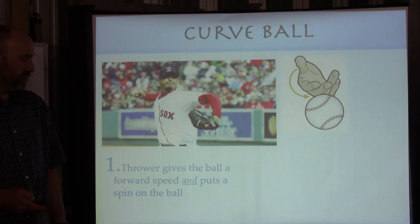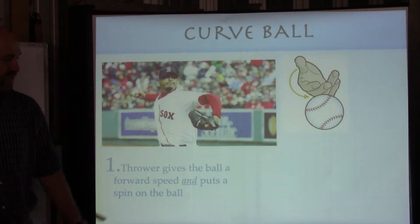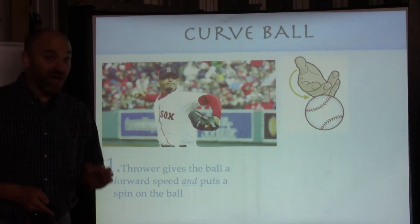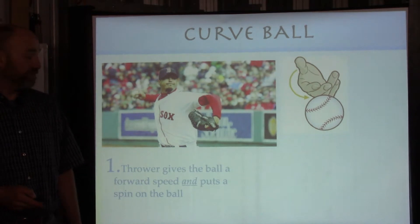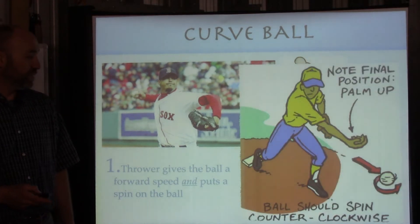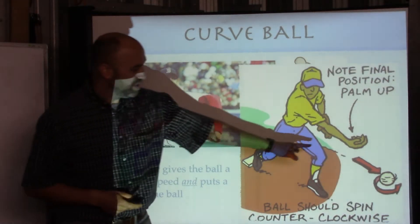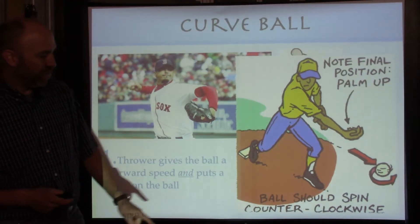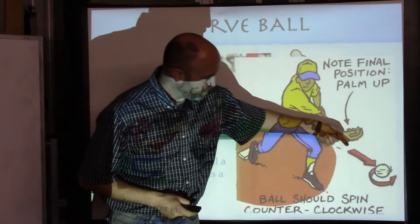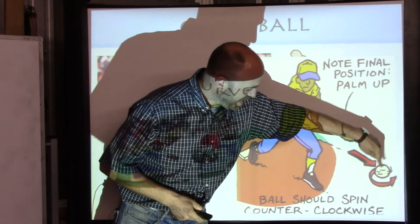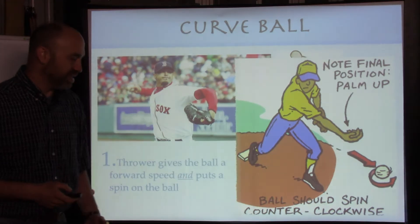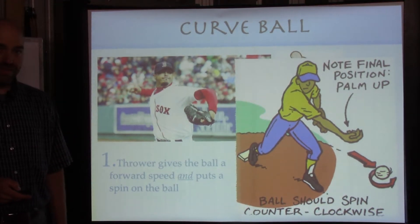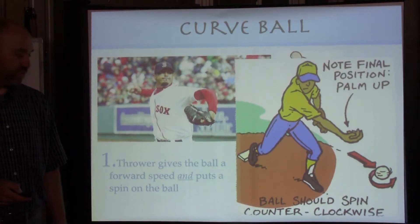Here's a pitcher about to throw a curveball. He's going to give it a sideways spin along with its forward speed. As it leaves his hand, his palm is going to end up facing upward. A forward speed and a sideways spin - those are the two pieces necessary to throw a curveball.